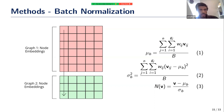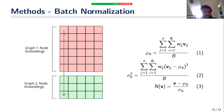Batch normalization is a technique where you normalize the features of graphs within a batch. For example, with a batch of two graphs, you find the mean and variance of each feature column across all node embeddings and normalize accordingly.